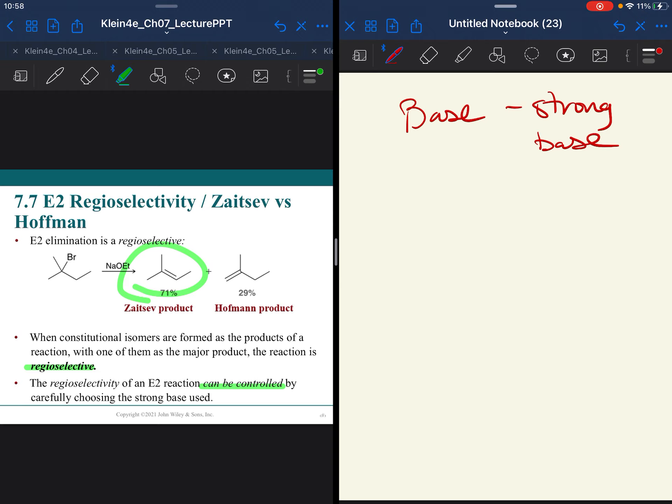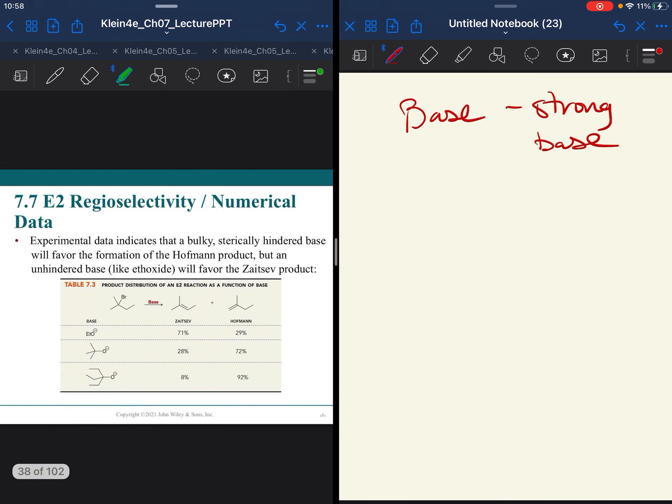For the bimolecular reactions, SN2 and E2, you need a strong reagent, either strong nucleophile or strong base. So there are different bases that will give different major products, Zaitsev versus Hofmann.